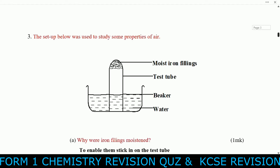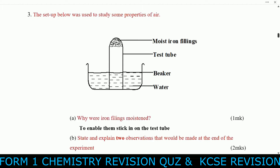Question three: The setup below was used to study some properties of air. You can see a water beaker, a test tube, and moist iron fillings. You are asked why the iron fillings were moistened — to enable them to stick inside the test tube. That is why they were moistened.